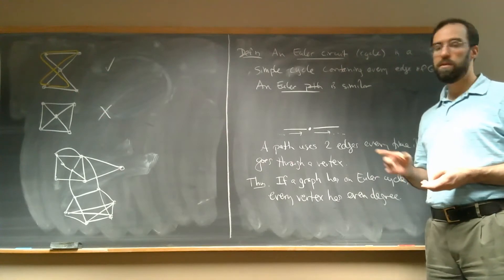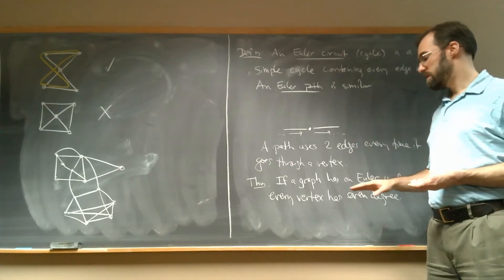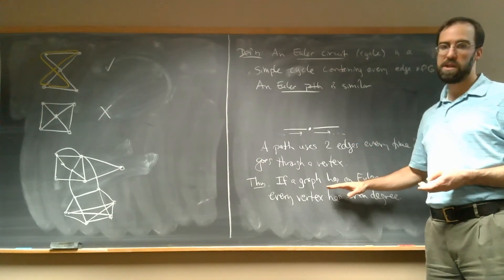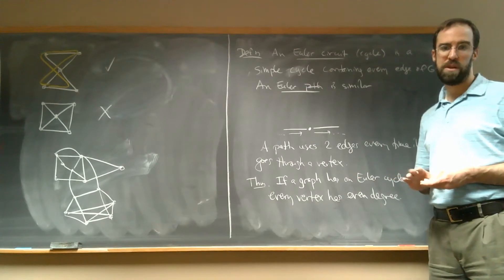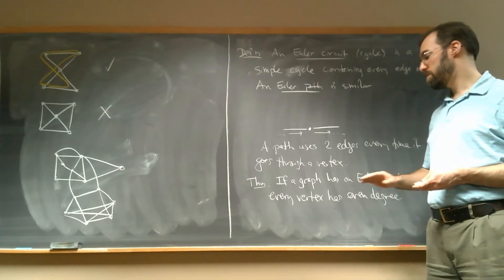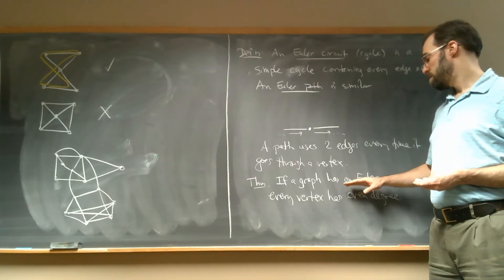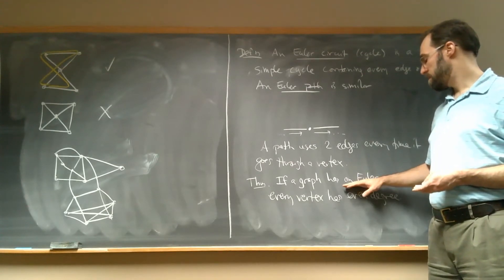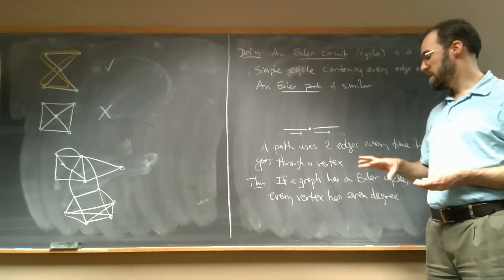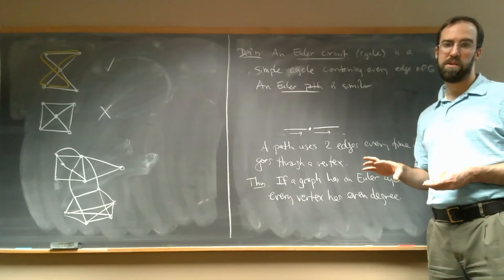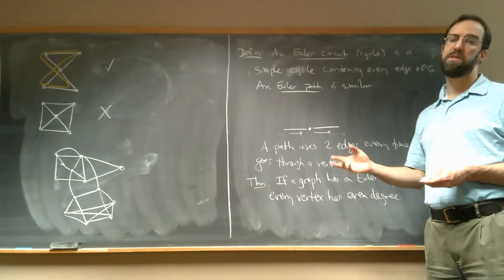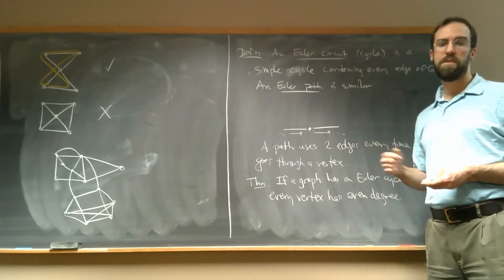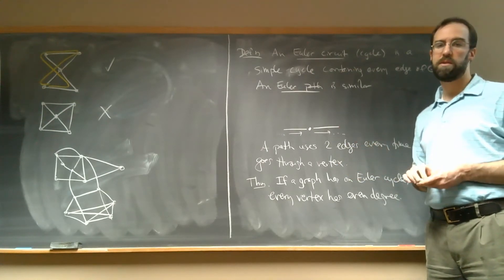It turns out it always does exist. This theorem is actually an if-and-only-if. Not only does every graph with an Euler cycle have to have every vertex with an even degree, but if all the vertices have an even degree, you definitely have an Euler cycle.